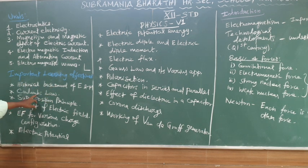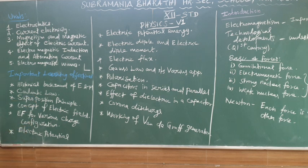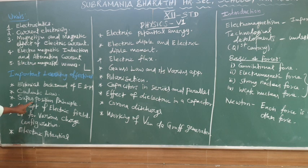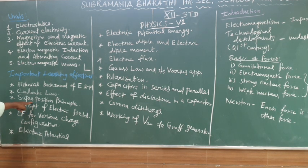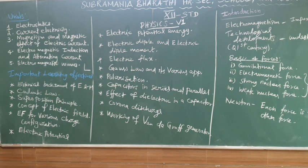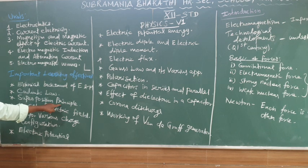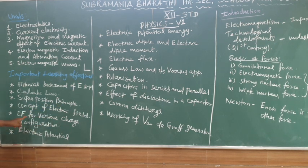Second is Coulomb's law. Coulomb is a scientist. The first objective is Coulomb's theoretical law. Second is the superposition principle. Superposition involves multiple charges. We will derive the equation and explanation for the superposition principle.